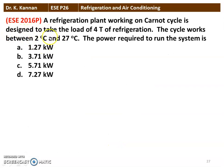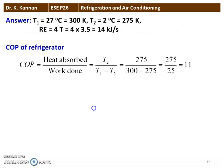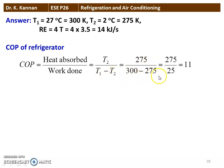The next question is from the 2016 question paper. A refrigeration plant working on a Carnot cycle is designed to take a load of 4 tons of refrigeration. The cycle works between 2°C and 27°C. T1 = 27°C = 300 K, T2 = 2°C = 275 K. COP = T2 / (T1 − T2) = 275 / (300 − 275) = 275 / 25 = 11.